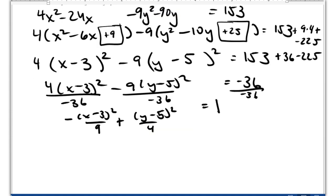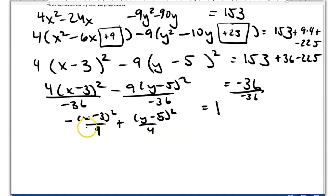And now I'll just rearrange those, because I don't like seeing them with the positive in the back. So we're going to put the positive one in the front, y minus 5 squared over 4 minus x minus 3 squared over 9 equals 1. And there's my hyperbola.